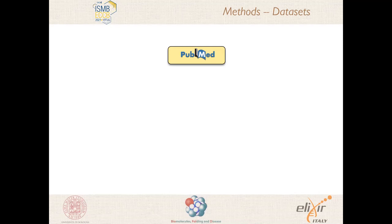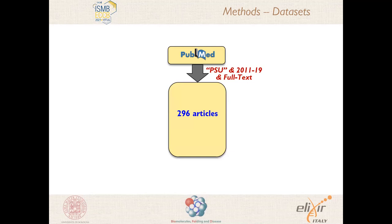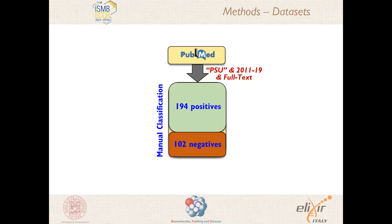We also restricted the search to full text articles and to a time range not overlapping the ProTherm dataset. By that, we retrieved on the order of 300 articles. By manual screening of these 300 articles, we found that only about two-thirds of them did contain the target data. It was at this point that we recognized the need to devise a more selective text processing tool.